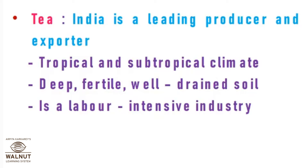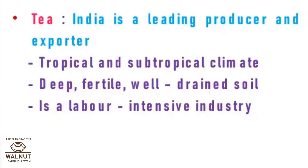Next is tea. India is a leading producer and exporter of tea. Tea grows in tropical and subtropical climates, which suits tea plantation well. It also requires deep, fertile, and well-drained soil. Tea is a labor-intensive industry — a lot of labor is required for plucking the leaves, drying them, and processing them in the factory.